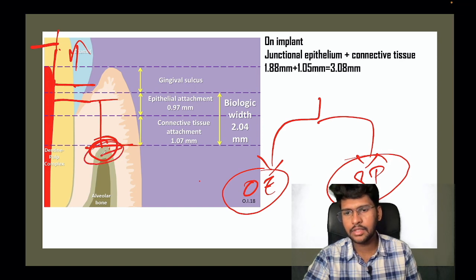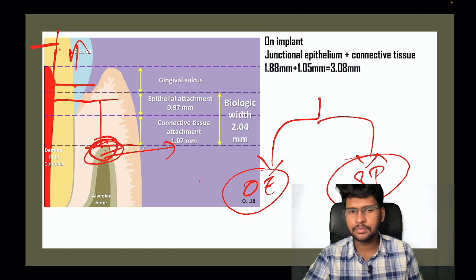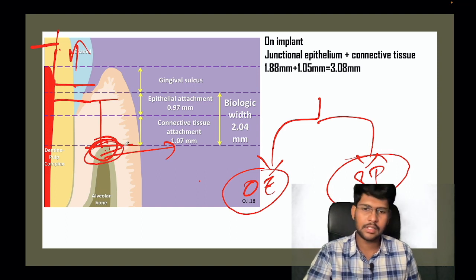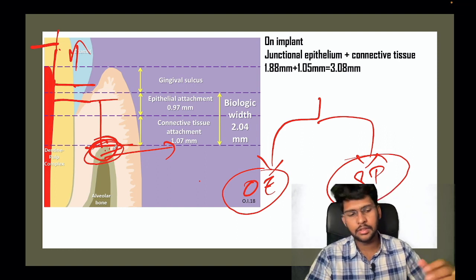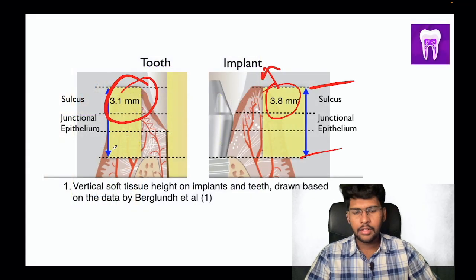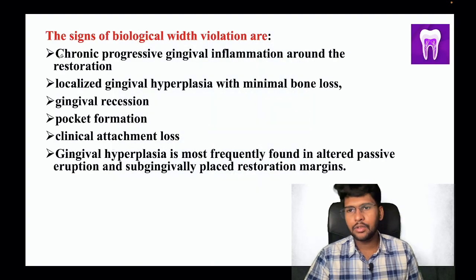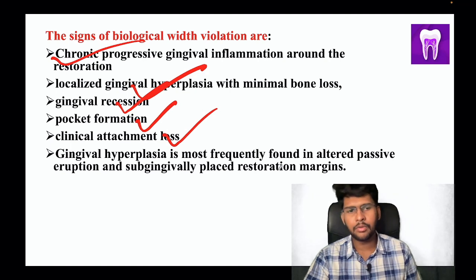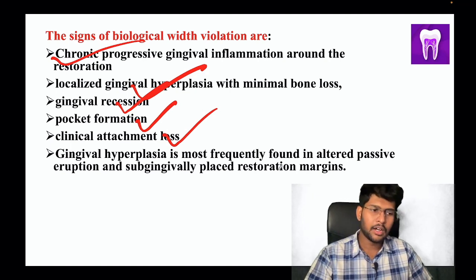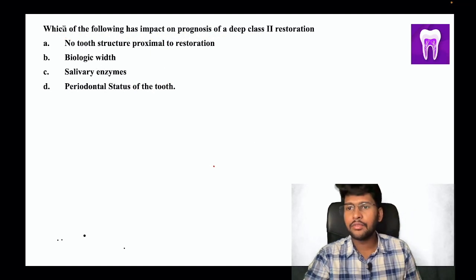The second option is surgical procedures — reduction in the size of the interdental alveolar bone. This is only indicated if the bone support on the other side is adequate. You must assess whether the remaining alveolar bone can give enough support for normal tooth function. If biologic width is violated, consequences include chronic progressive gingival inflammation, localized gingival hypoplasia, gingival recession, pocket formation, and clinical attachment loss — essentially all kinds of periodontal disease.